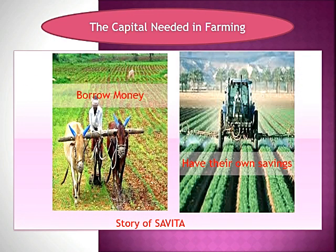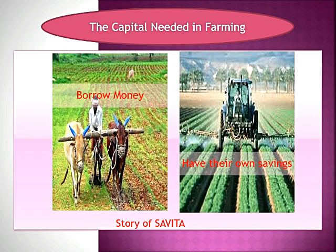There is a story in your book about Savita. She is a very small farmer with one hectare of land. She needs seeds, fertilizers, pesticides etc., and she has calculated the expenses will come to around Rs. 3,000. But she doesn't even have Rs. 3,000 for her own farm. So she decides to go to a large farmer named Tejpal Singh and ask for a loan. Tejpal Singh is ready to give her the loan, but he has put conditions.